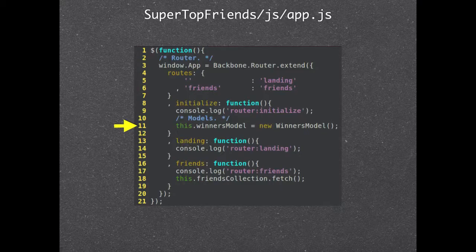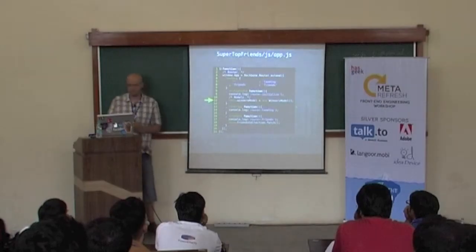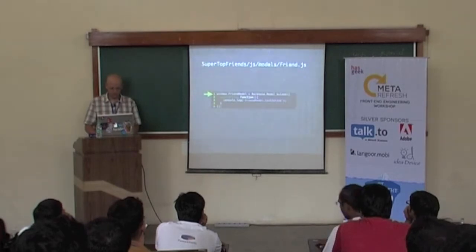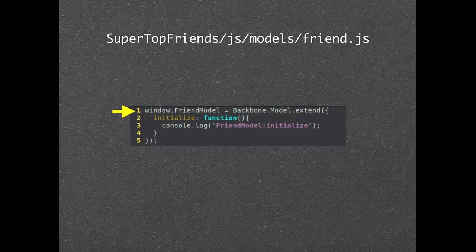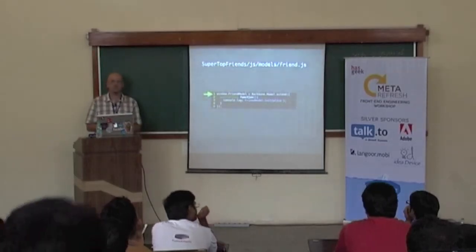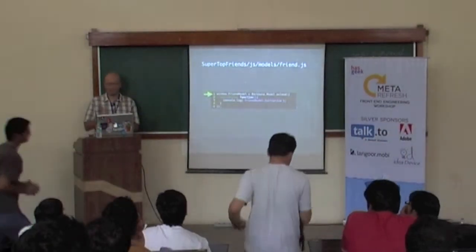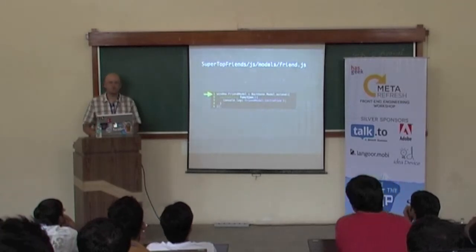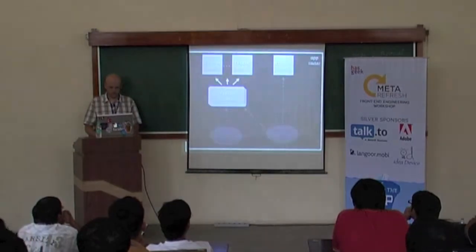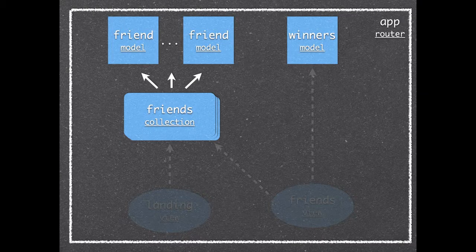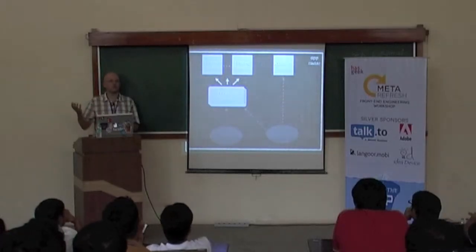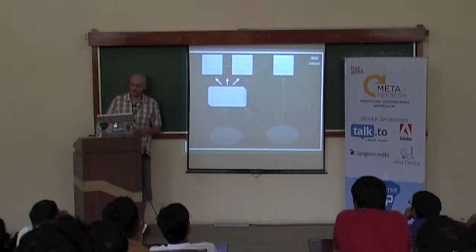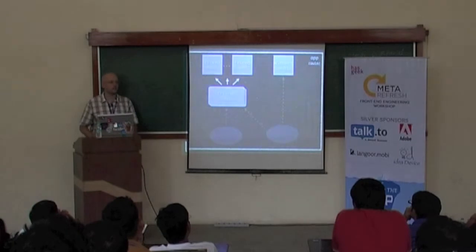This is how we initialize the Winners model object — Winners model is a new Winners model. Then we have our Friend model. This one is almost empty; there is only an initialize function, because you can store whatever data you want in a model. You can even add them at runtime. This Friend model — we create a bunch of them. We don't know how many because they come from Facebook. To handle them, we use the collection that we call Friends Collection. This Friends Collection will be responsible for creating these models and storing them.